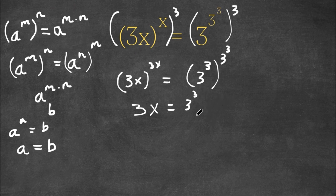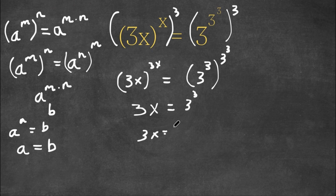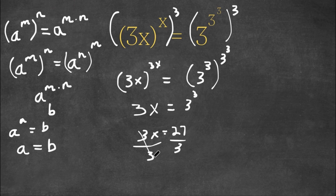Now we can solve this in two ways. Our first way: 3 to the power of 3 is 27, so we get 3x is equal to 27. And if we divide both sides by 3, this cancels out and we get x is equal to 27 divided by 3, which is 9.